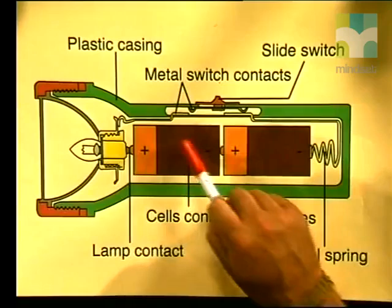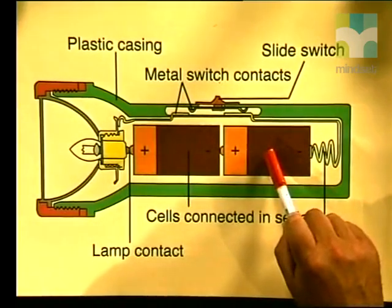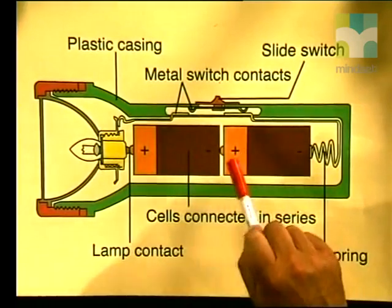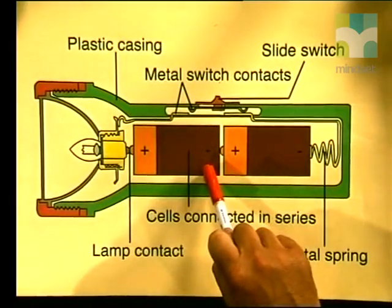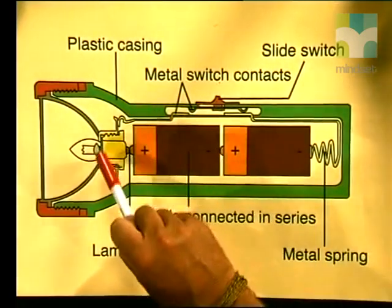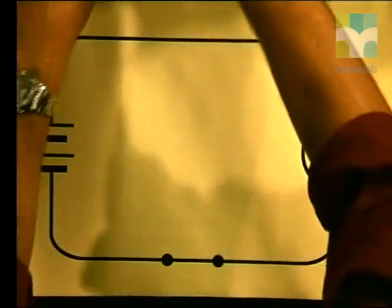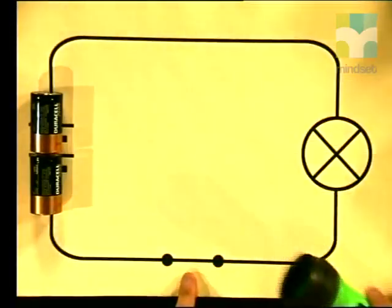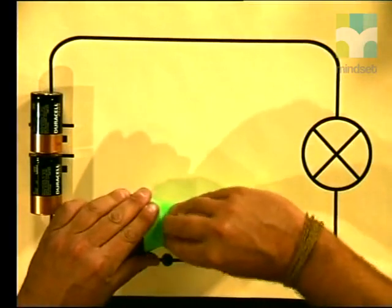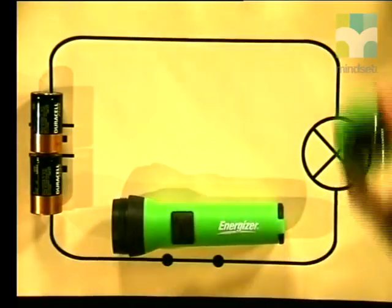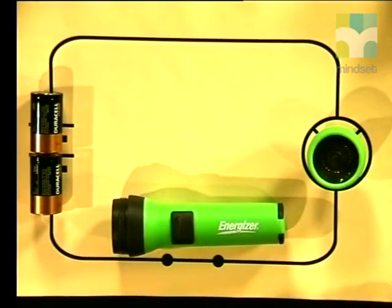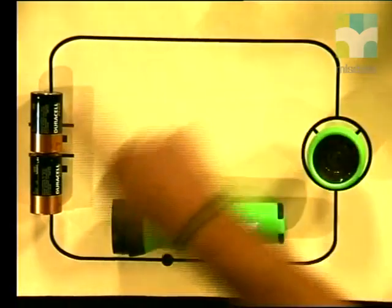Do you see that the battery consists simply of two torch cells connected in series, with the positive terminal of one cell connected to the negative terminal of the second cell? The battery is then connected to a switch which is then connected to the light bulb. A different way of describing the torch is by using a circuit diagram, where the parts are represented by symbols. Here is my circuit diagram of the torch: two cells in series, a switch, and a torch lamp. The lines in the diagram represent the metal conductors which connect the whole system together.